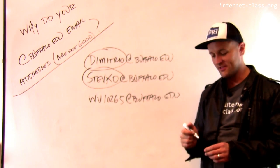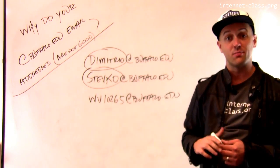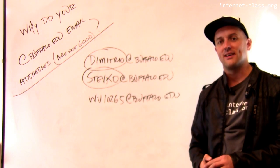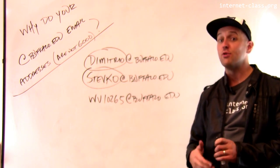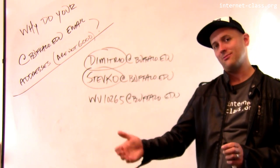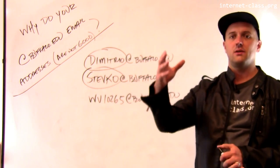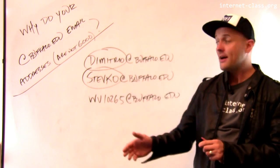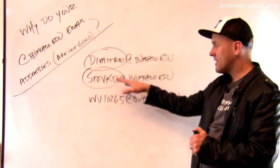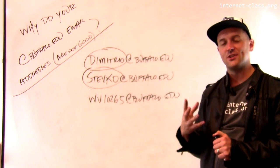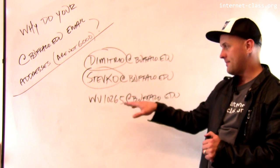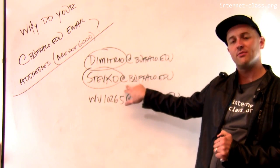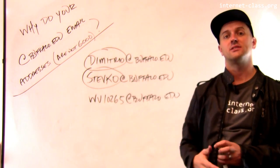The history of how email addresses came to look this way is pretty interesting. A lot of addresses on the internet have moved into a URI format — protocol, some information about the host name, and then the path. Email addresses have stayed true to their original format. The guy who came up with the at sign in email addresses died recently, which was pretty sad.